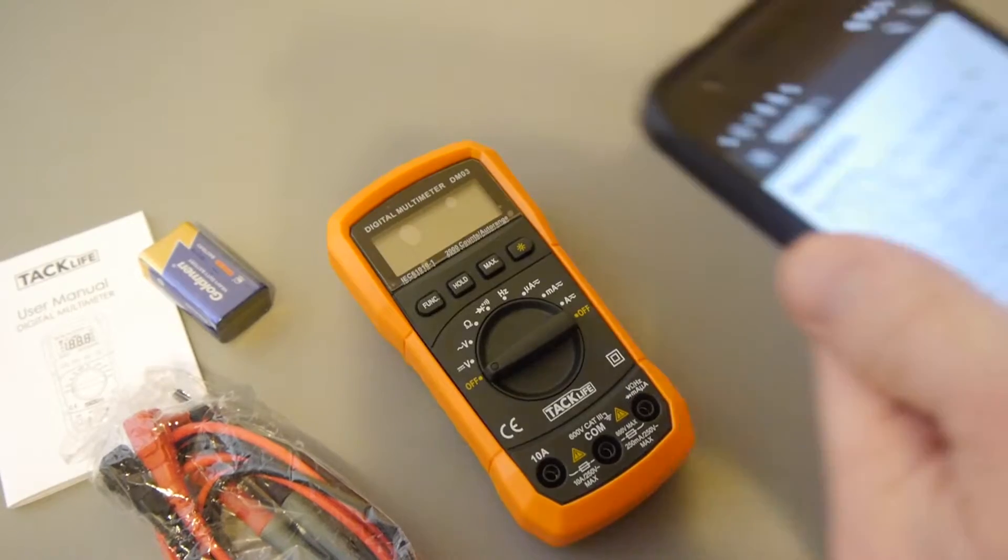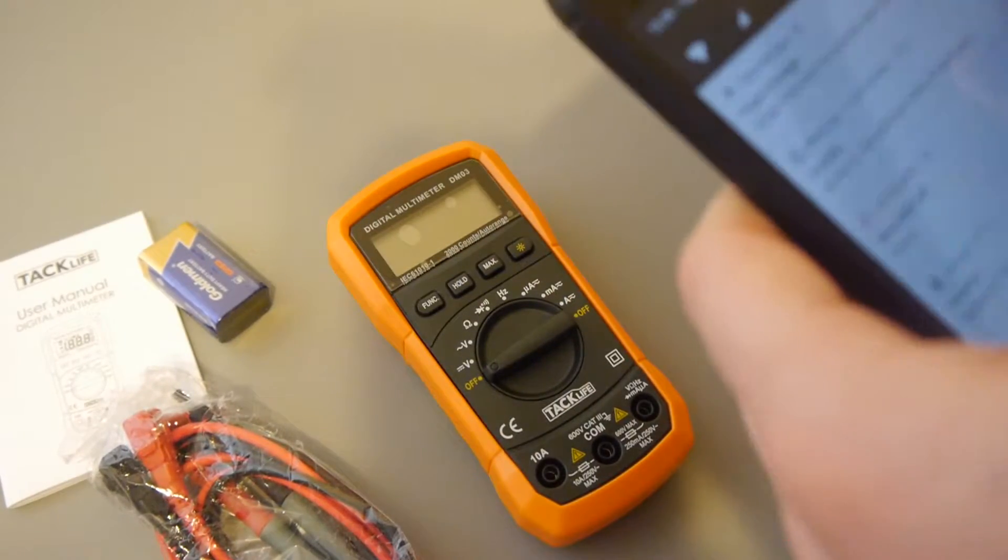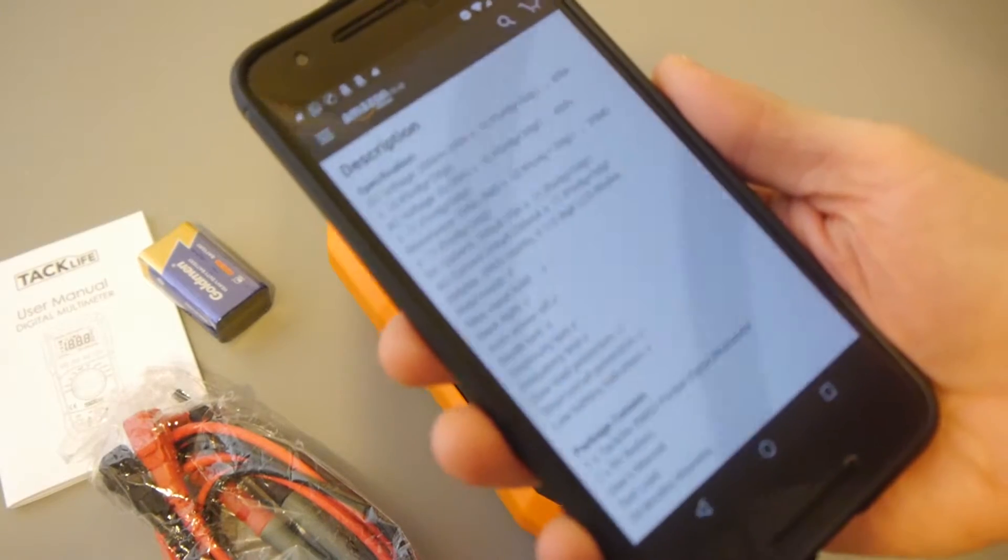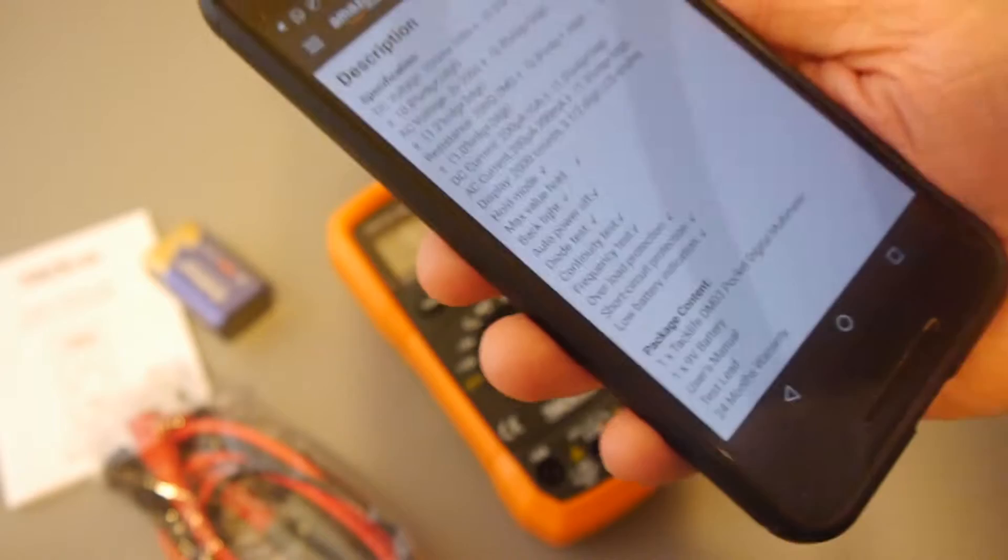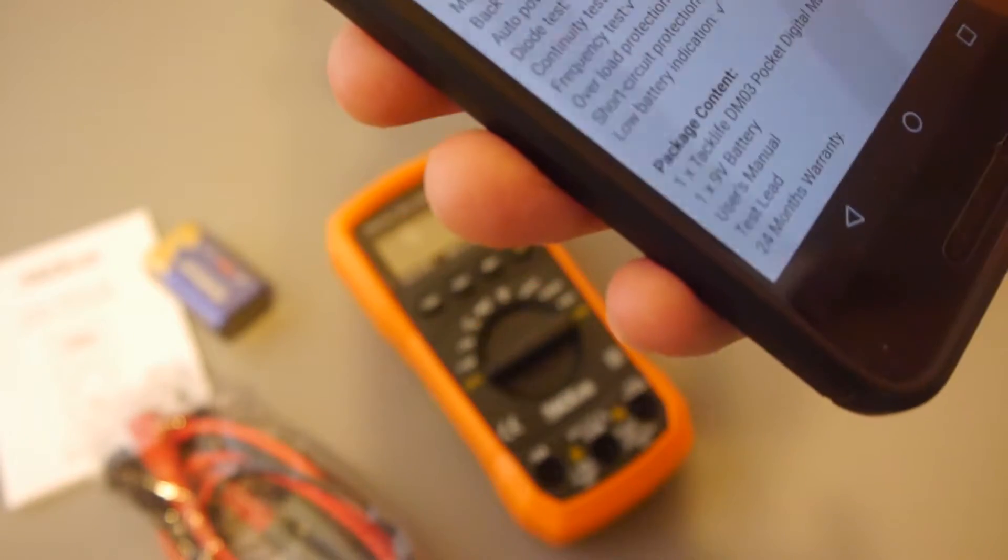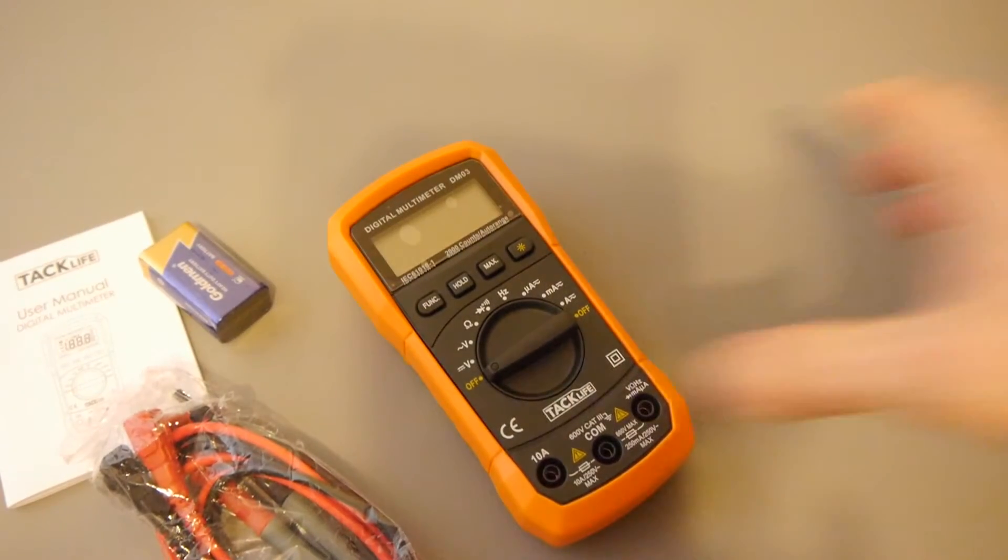So, it comes with a two year warranty and it's got certain features such as low battery indication, overload protection, short circuit protection, continuity test, frequency test, diode test, auto power off, backlight, hold mode. And it's got all the different voltage and current specifications there as well.